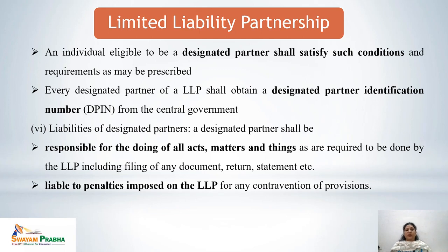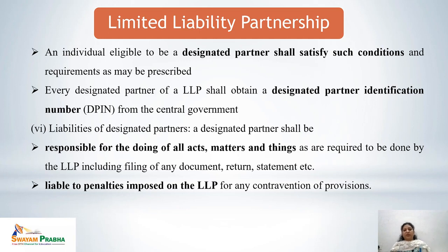An individual eligible to be a designated partner shall satisfy such conditions as mentioned in the Act. Every designated partner would be issued an identification number known as DPIN, issued by the central government. A designated partner shall be responsible for doing all acts and matters required to be done by the LLP, and is liable to penalties imposed on LLP for any contravention of the provisions of the Act.